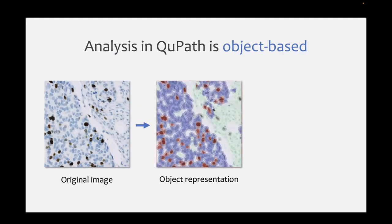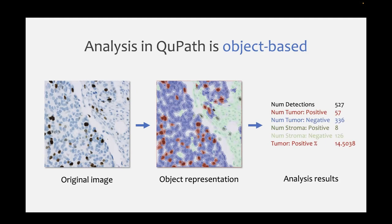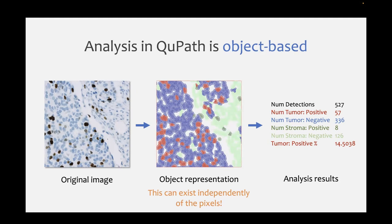QPath's approach to break this down is that you go from your original image with your millions, if not billions, of values, and then you create an object representation. You've heard the term 'object' many times. Then we query that object representation in order to get the results at the end. One crucial thing is that once you have this object representation - like all of your cells - that can exist entirely independently of the pixels. That enables QPath to work quickly, because it creates this intermediate representation which is a summary of the data. We've gone from 60 billion numbers to maybe a few thousand to represent the objects, and then we go to the final step of summarizing that.